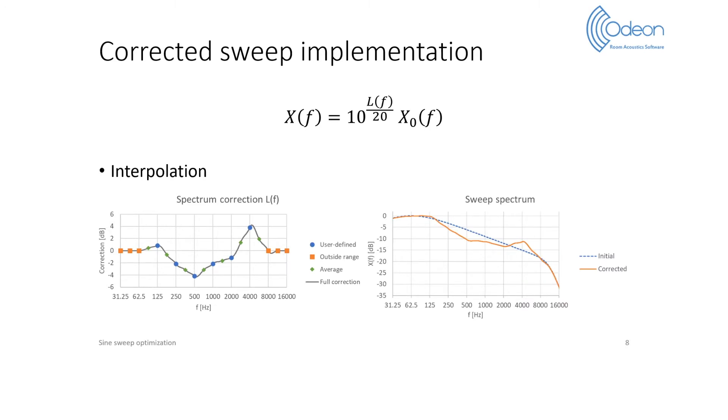The resulting corrected sweep spectrum is shown in this next graph, where you can see that the sweep is only modified on the sweep's frequency range. The correction consists of oscillations around the initial spectrum in order to preserve its total power.